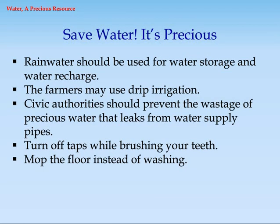Save water — it's precious. Rain water should be used for water storage and water recharge. Farmers may use drip irrigation. Civic authorities should prevent the wastage of precious water that leaks from water supply pipes. Turn off taps while brushing your teeth. Mop the floor instead of washing.